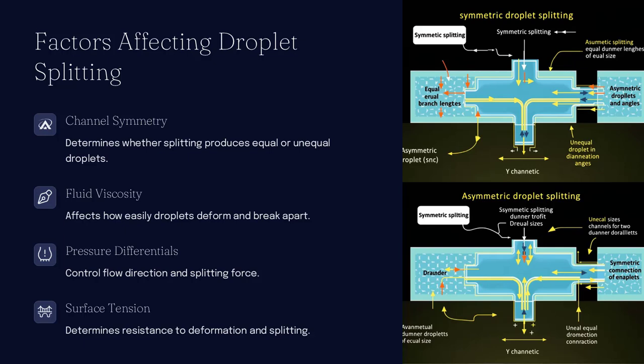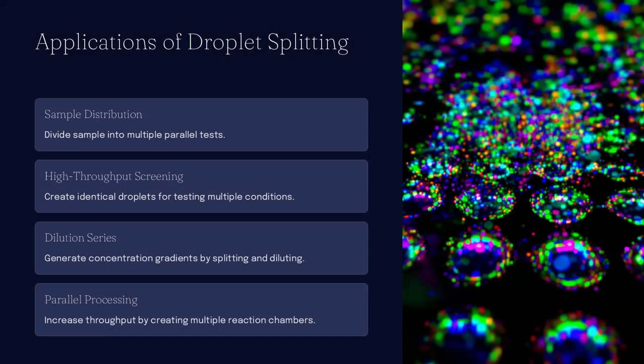Merging droplets involves bringing two or more droplets into contact until their interfaces combine, usually triggered by hydrodynamic forces or electrowetting. Why merge droplets?